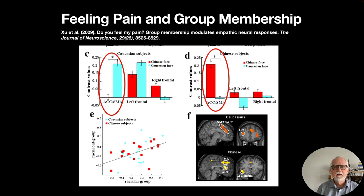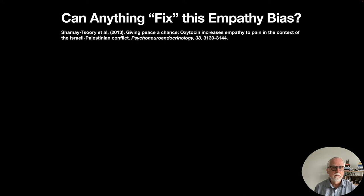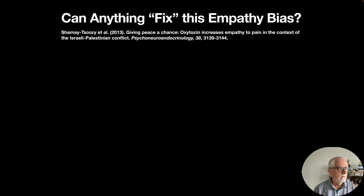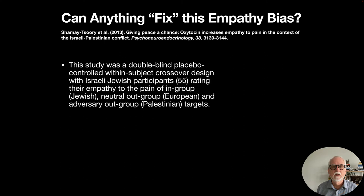This provides evidence that we have an automatic bias in our initial impulses to show empathy toward in-group members over out-group members. Can anything be done to fix this empathy bias? Here's an interesting study looking at the Israeli-Palestinian conflict — examining whether oxytocin increases empathy for pain in that context.